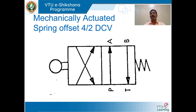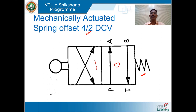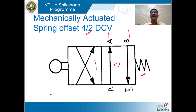We shall draw a symbol for a mechanically actuated spring-offset four-way two-position directional control valve. Two adjacent squares represent position O and position 1. Four-way: P connected to pump line, T to tank line, and A and B connected to the cylinder output ports. Mechanically actuated means roller operated.